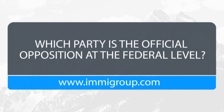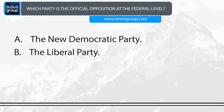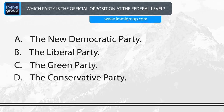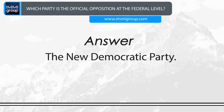Which party is the official opposition at the federal level? A. The New Democratic Party. B. The Liberal Party. C. The Green Party. D. The Conservative Party. Answer: The New Democratic Party.